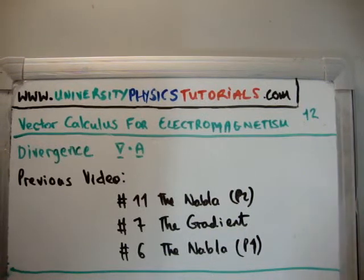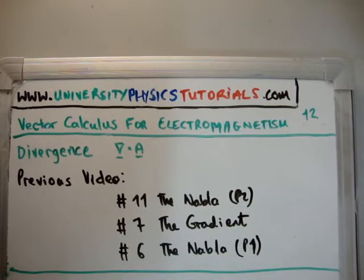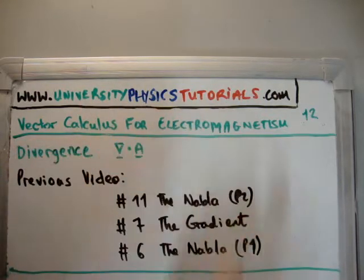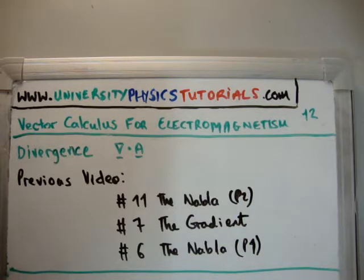In this video, I'd like to continue on with my tutorials on vector calculus for electromagnetism. This is video number 12, and I'm going to discuss the divergence of a vector. I'd like to draw your attention to my website, universityphysicstutorials.com. There are three previous videos which are relevant to this one: number 11 on the nabla part 2, number 7 on the gradient, and number 6 on the nabla part 1.